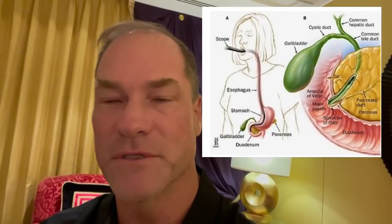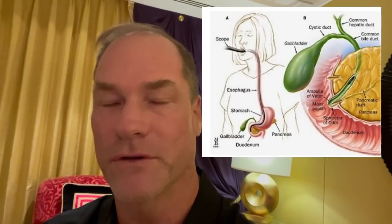If we look at the anatomy and physiology — what the gallbladder does — the gallbladder stores a substance called bile. Bile is utilized to help us break down or emulsify fats. Bile is stored in the gallbladder, produced in the liver, goes down the hepatic duct, joins the common bile duct, and then enters the duodenum through something called the sphincter of Oddi.